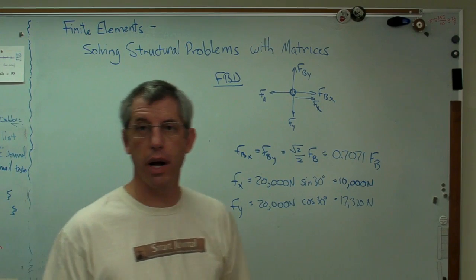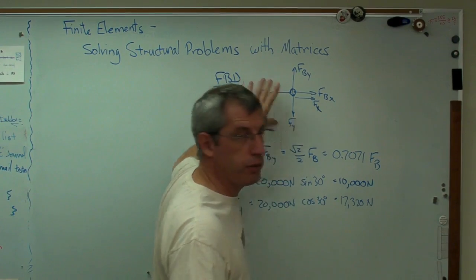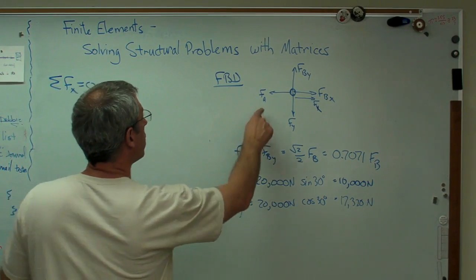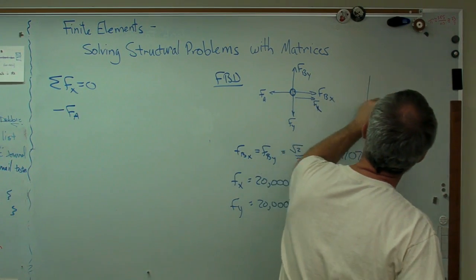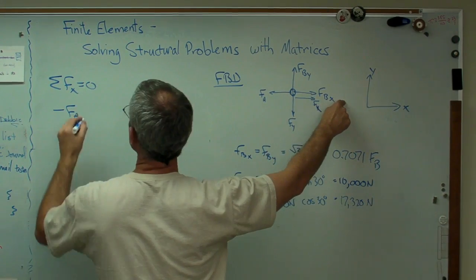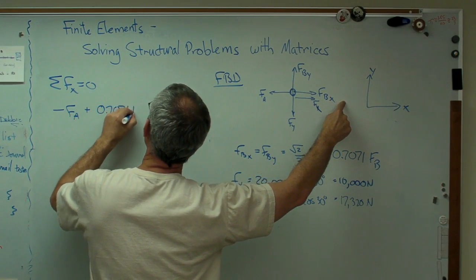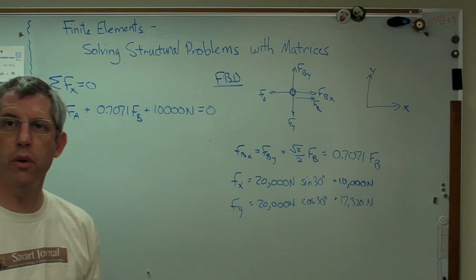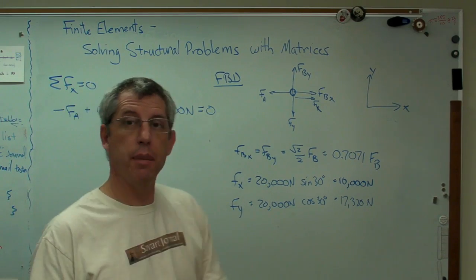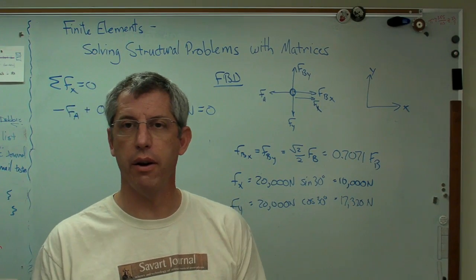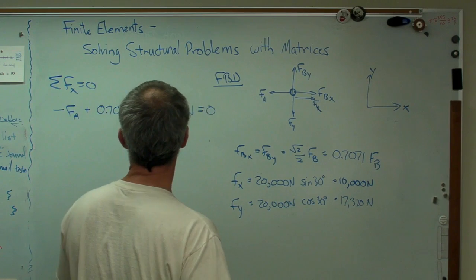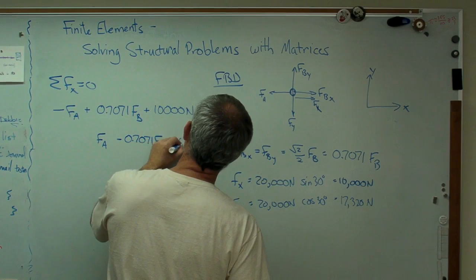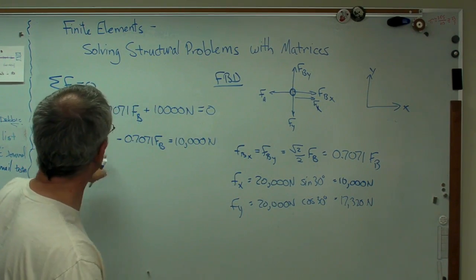How do you solve a statics problem? You write out the free body diagram and then you write out the equations of equilibrium. There's the free body diagram. Let's do the equations of equilibrium. The first one, sum of the forces in the x direction equals zero. That should be pretty easy. Let's see, minus FA, because it's going in the negative x direction, plus FBX. Well, we already know that's 0.7071 FB plus FX, which is 10,000. And that all has to equal zero. That's good. I'm going to rearrange this just a little bit. What I'm going to do is there's an equal sign there. I'm going to put the things I don't know on the left and the things I do know on the right. So that's equal to 10,000 newtons.